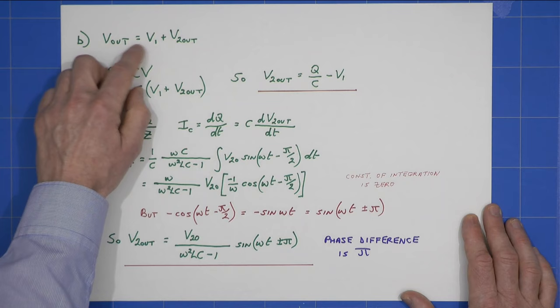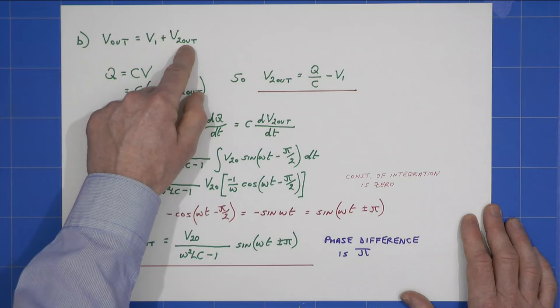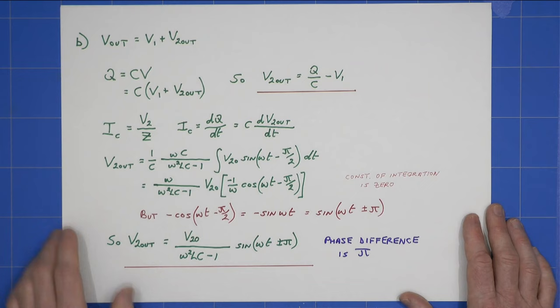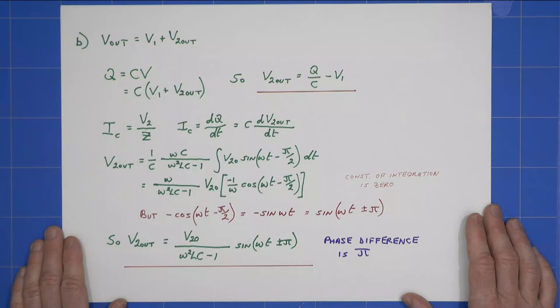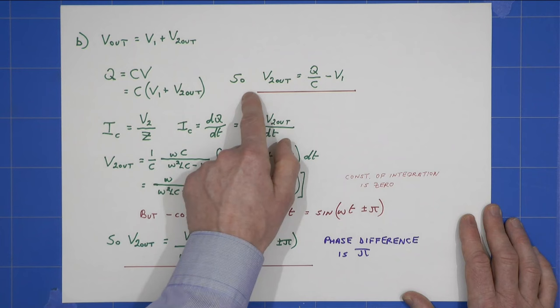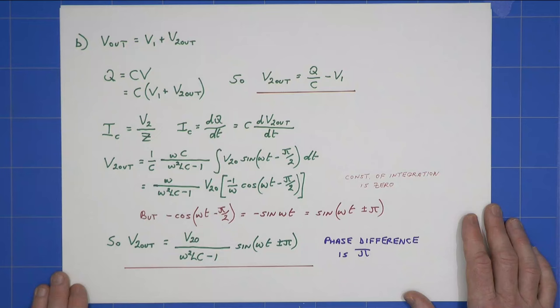So, part B, I've already said that the DC component V1 comes to Vout unaffected, but we also have the AC component V2out. Well, charge on the capacitor is always going to be C times V at any instant, so it's that. So, simply rearranging our AC component is that expression there at the output.